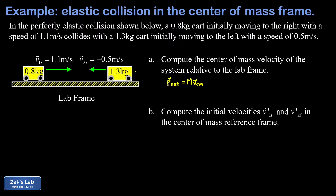To get the center of mass velocity, we use a theorem from classical mechanics which says that the net momentum of a system is equal to the total mass M times the center of mass velocity. So what we need to do is get the net momentum of the system by summing the momenta of all the moving pieces, set that equal to the total mass multiplied by the unknown center of mass velocity, and then solve for it.